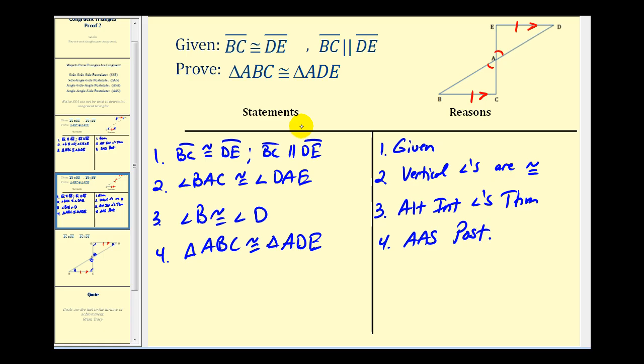So there's often more than one way to construct a geometric proof. Just because your answer may not match the back of the book doesn't mean that it's incorrect. I hope you found this helpful.